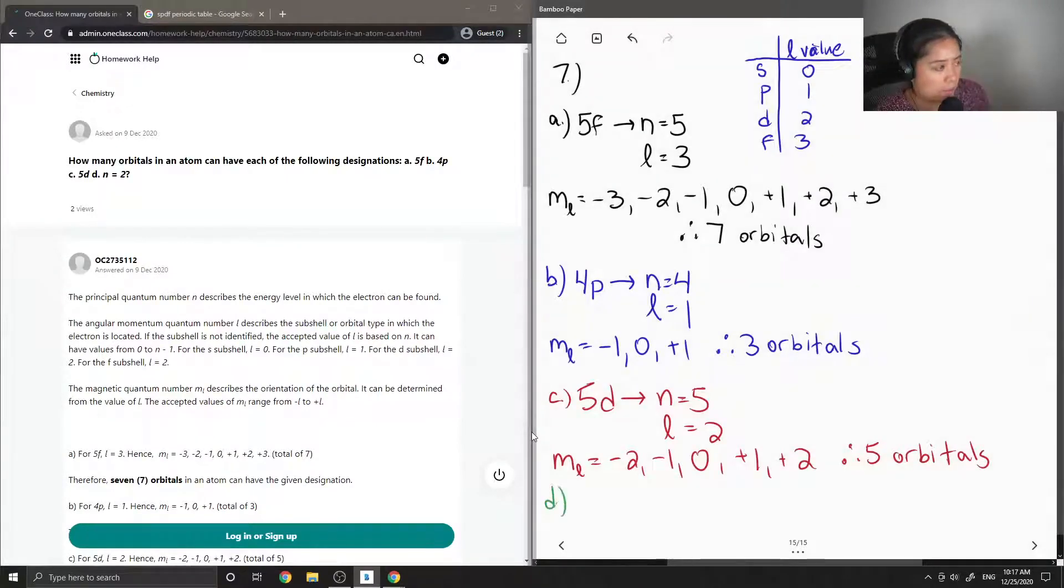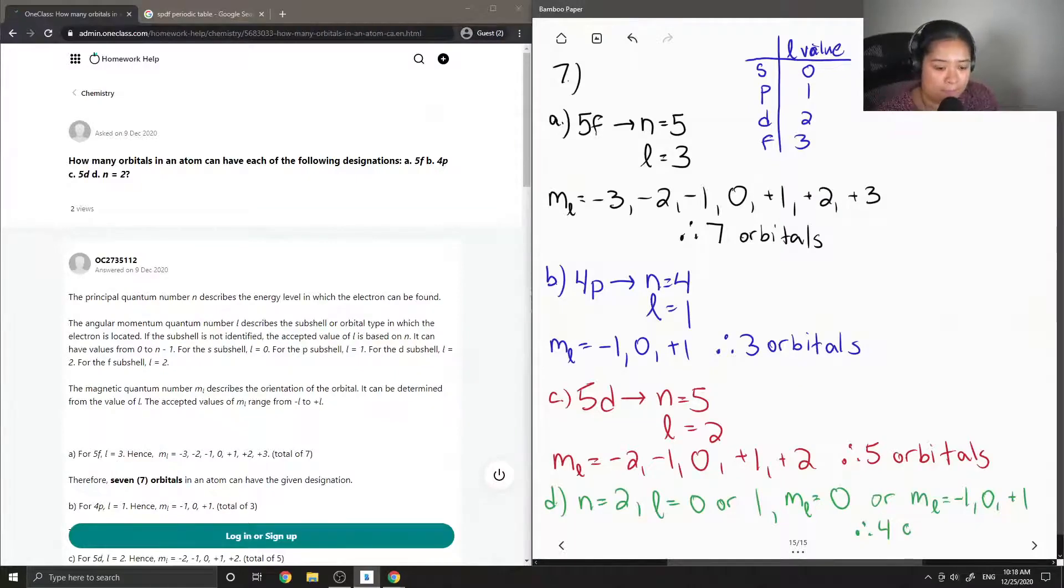And then now let's look at d. When n equals two, that means that our l value has to be less than two. So they didn't specify what it is. So I'm just going to say l can either be equal to zero or one. So that means our ml value is either equal to zero, or it's equal to ml negative one, zero to positive one. So in total, there are four orbitals.